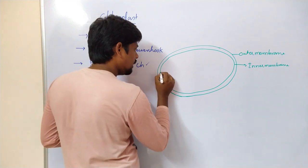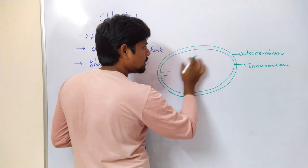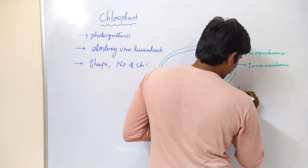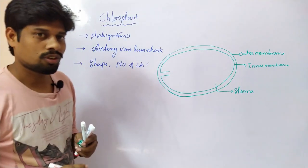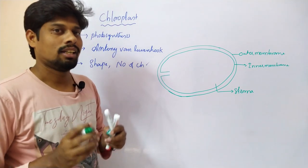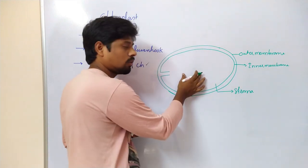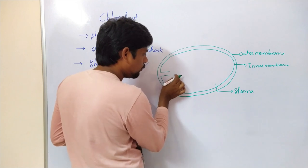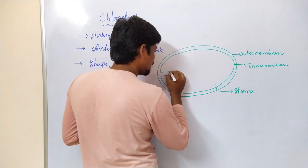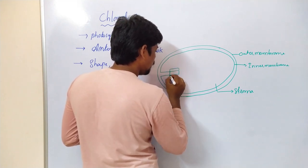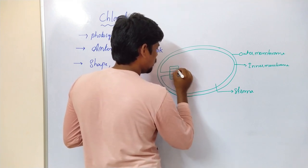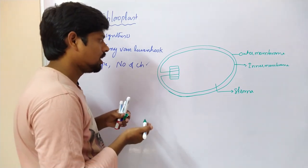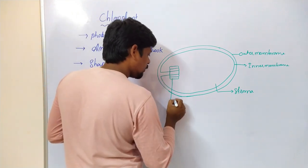This inner membrane extends into the empty space present in the chloroplast. That empty space is called the chloroplast stroma. Whereas in the mitochondria the empty space is called the matrix - that should be remembered. Stroma is present in the chloroplast, whereas matrix is present in the mitochondria. The inner membrane extends into the inside, and these extensions form different discoidal structures stacked on each other.